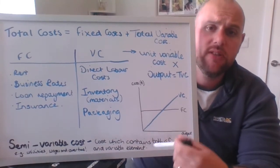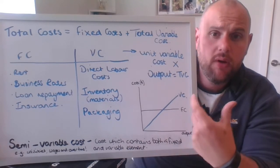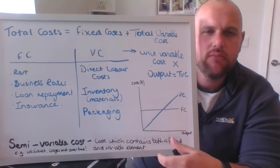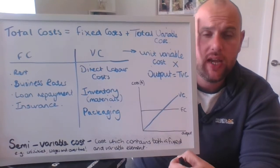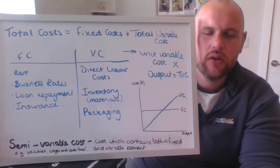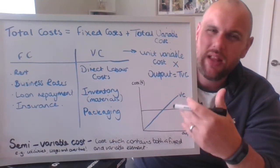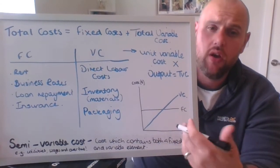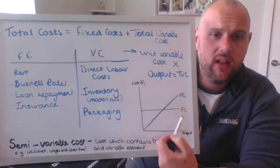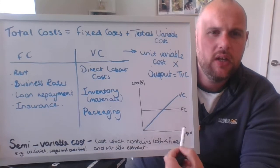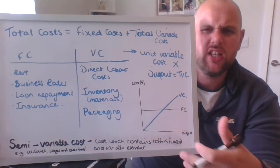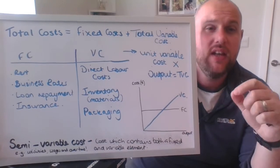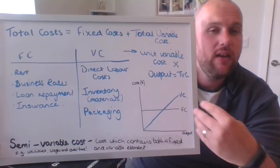When we look at costs we can split them into two different types: fixed costs and variable costs. Let's start with fixed costs — the clue is in the name. Fixed costs do not change in relation to output. In the short run, they don't change based on how much you make or sell. If we look at a graph, a fixed cost would just be a straight line correlated with output. As you sell more and more products, your rent doesn't change, your business rates don't change, your insurance doesn't change. It doesn't matter if you sell no products, one product, or ten products — the amount you're paying monthly for those items does not change in relation to output.